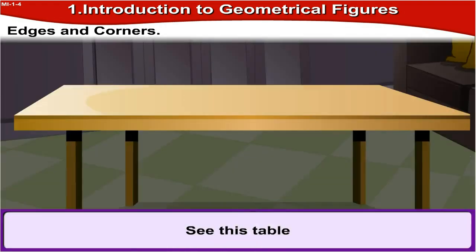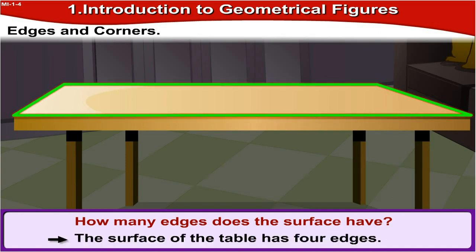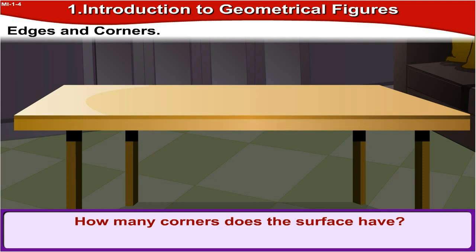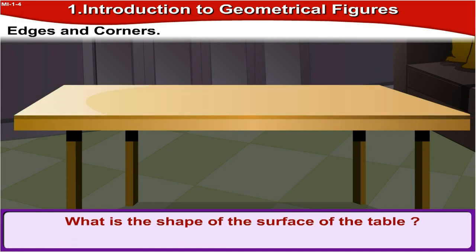See this table. Observe the surface of the table. Surface means this portion. Can you tell how many edges this surface of the table has? The surface of the table has four edges: one, two, three and four. How many corners does the surface have? It has four corners: one, two, three and four. What is the shape of the surface of the table? It is rectangular in shape, that is, it is a rectangle.